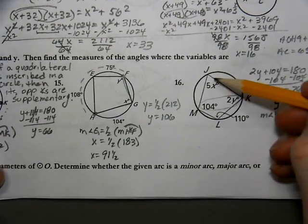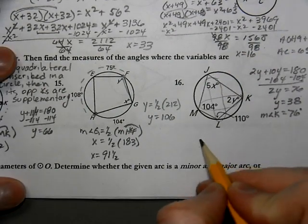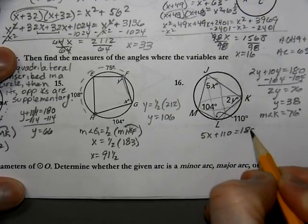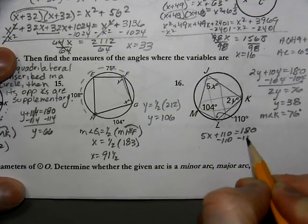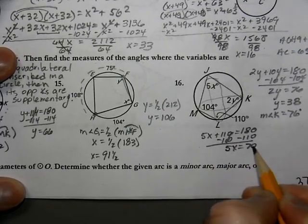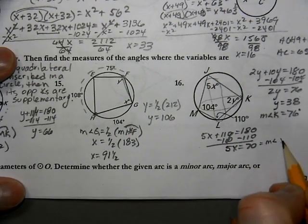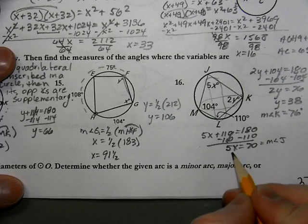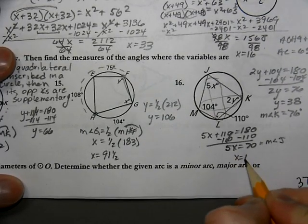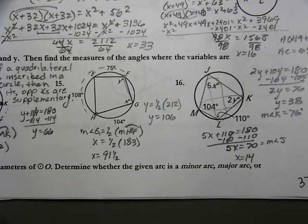For the other angle, opposite angles are supplementary if the quadrilateral is inscribed. So 5x plus 110 has to equal 180. Subtract 110 and we get 5x equals 70. That's the measure of angle J. But x itself — divide by 5 — 70 divided by 5 is 14.